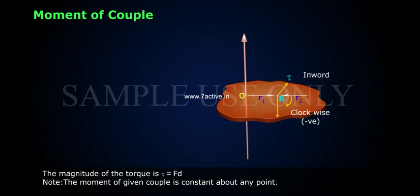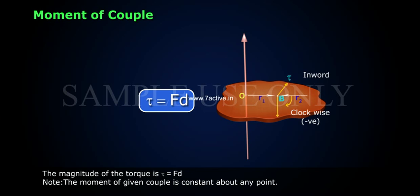The magnitude of the torque is τ equals F times D. Note: The moment of a given couple is constant about any point.